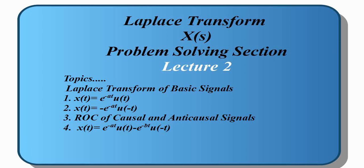This is the second lecture in the Laplace transform series. In this lecture we will solve the following questions — these are very basic questions. The first question is e raised to minus at into u of t, and the second one is minus e raised to minus at into u of minus t. These are the causal and anti-causal signals, and we will discuss the ROC of causal and anti-causal signals.